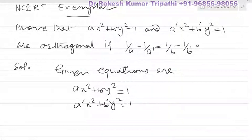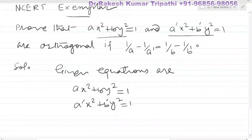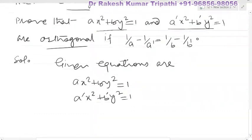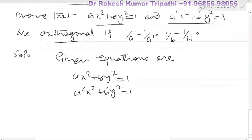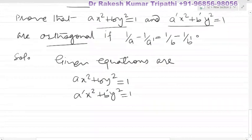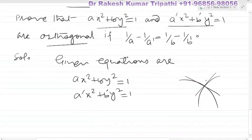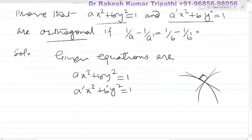The question is: prove that these two curves, whose equations are given, are orthogonal — meaning they are perpendicular — if 1/a − 1/a' = 1/b − 1/b'. Orthogonal means their tangents at the point of intersection are at 90 degrees.